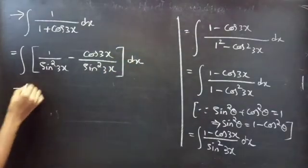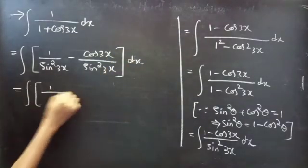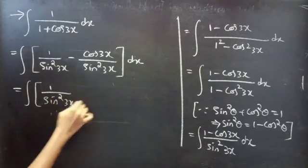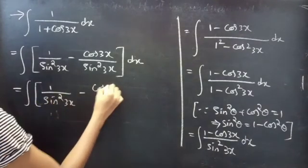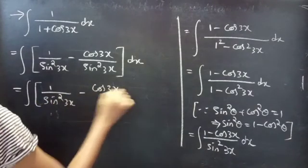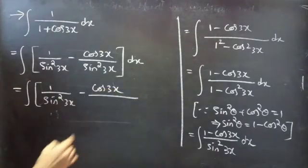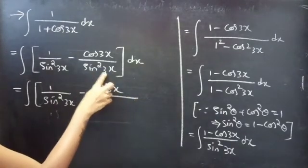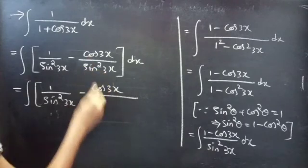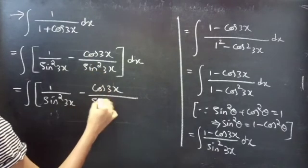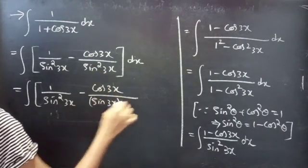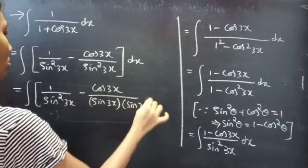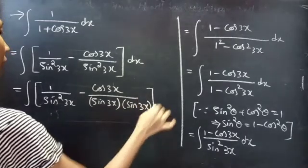So this equals integral of 1 by sin²(3x) minus cos 3x by sin²(3x) dx. Note that sin²(3x) means sin 3x times sin 3x, so you can write this as sin 3x into sin 3x in the denominator.